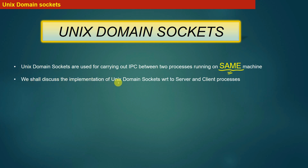We will discuss the implementation of UNIX domain sockets with respect to server and client processes. The two communicating processes are classified as server process and client process. The server process waits for requests from the client process. It is the responsibility of the client process to send the computation request to the server process, and the server process processes the request and sends the result back to the client.